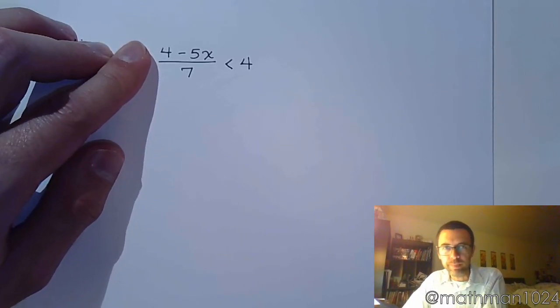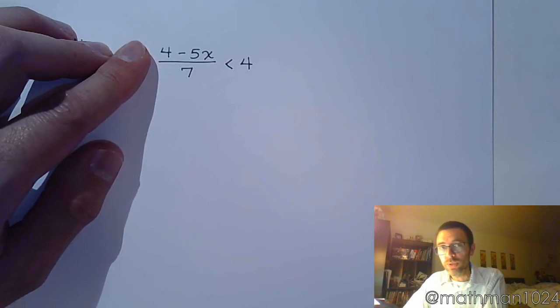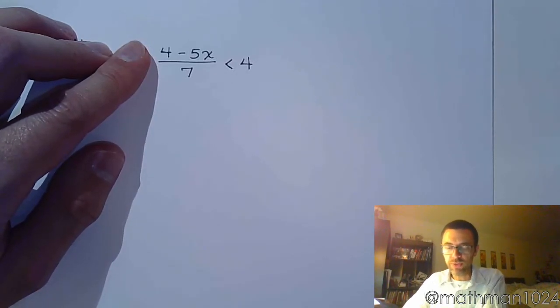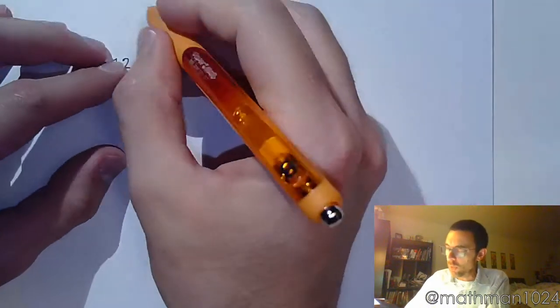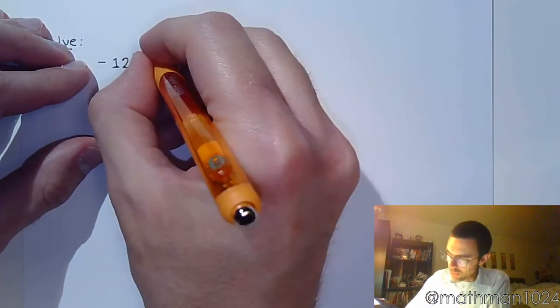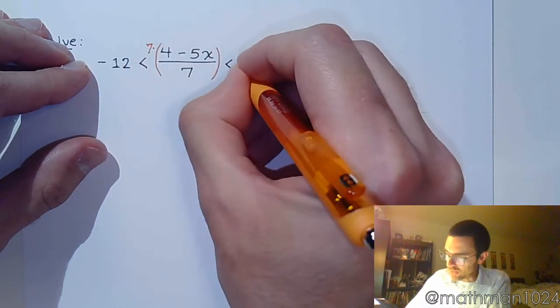So, don't look at this as a three-part inequality, just look at it like this. If you had this inequality, what's one of the first things that you would do? Hopefully, the first thing you would do would be to get rid of the 7, get rid of the denominator. And we can do that by multiplying times 7.